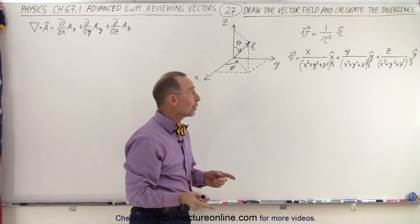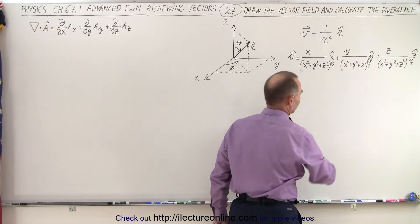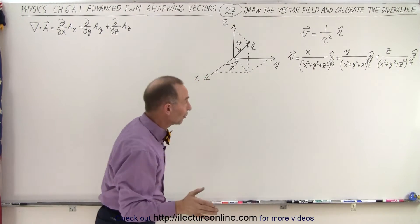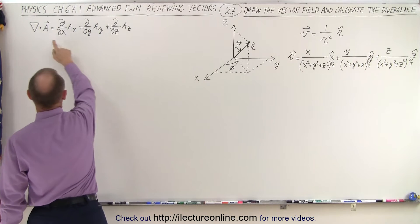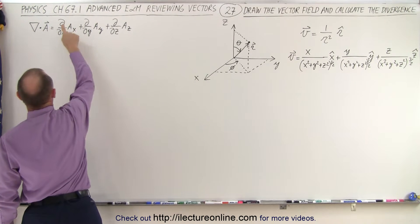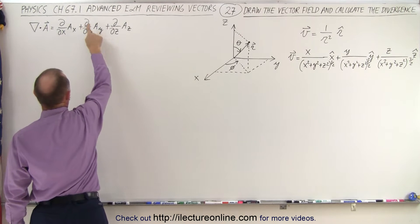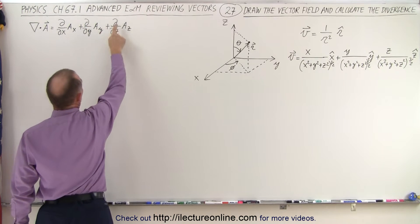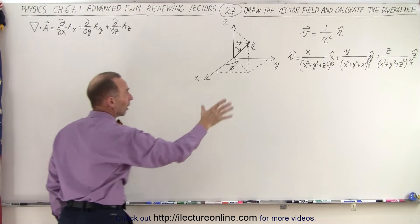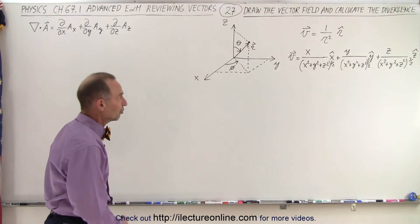But when we convert that into Cartesian coordinates, it looks a little bit worse. And now what we're going to do is find the divergence. The divergence can be calculated as the partial derivative with respect to x of the x component, plus the partial derivative with respect to y of the y component, plus the partial derivative with respect to z of the z component of the vector function as defined in Cartesian coordinates.